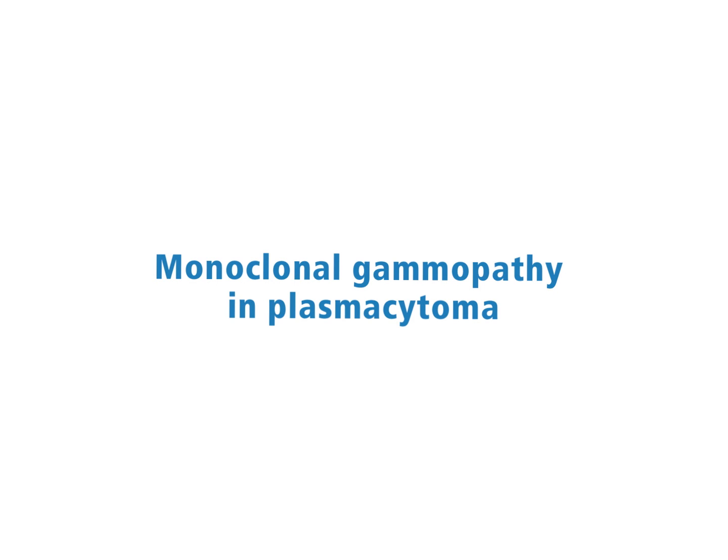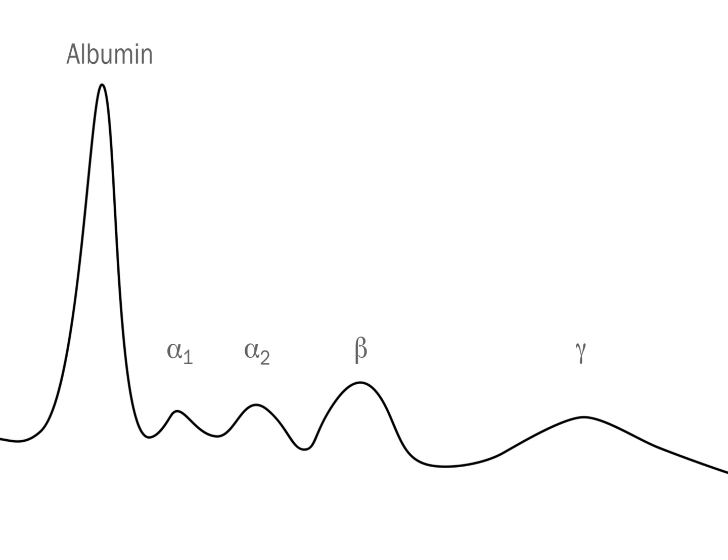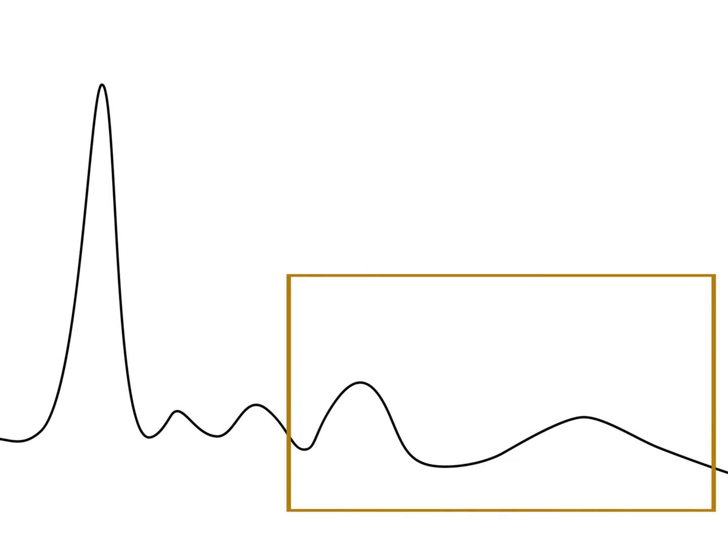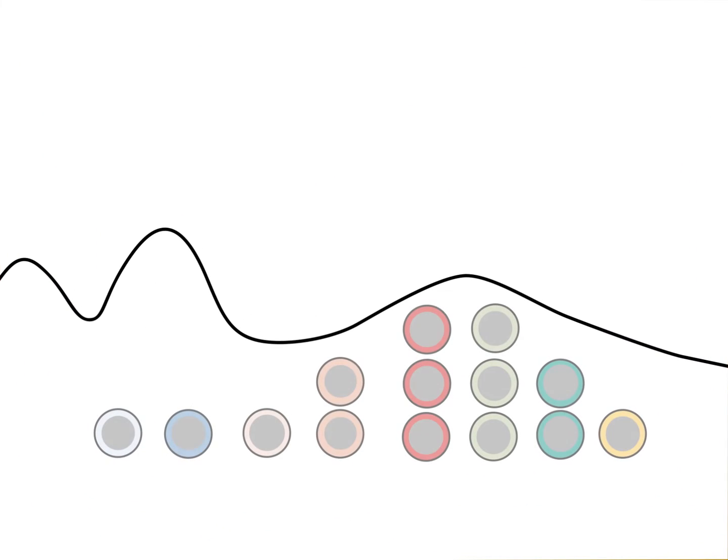Monoclonal Gammopathy in Plasmacytoma. Normal Situation: The electrophoresis of serum proteins separates proteins according to size and charge. When stained proteins are measured by densitometry, a typical electropherogram is obtained. In the section marked by a square, immunoglobulins were separated.